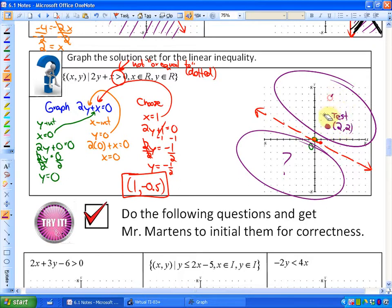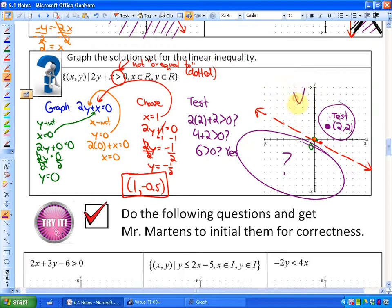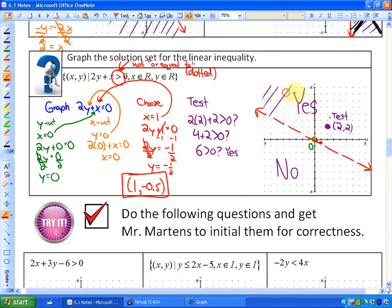So is 2 times 2 plus 2 greater than 0? So is 4 plus 2 greater than 0? Is 6 greater than 0? The answer to that is yes, which means the answer to any point in this entire side is going to be yes and this side is going to be no. So as far as what my solution looks like, it looks like this.